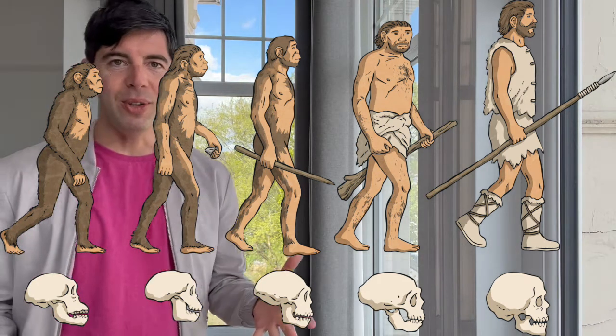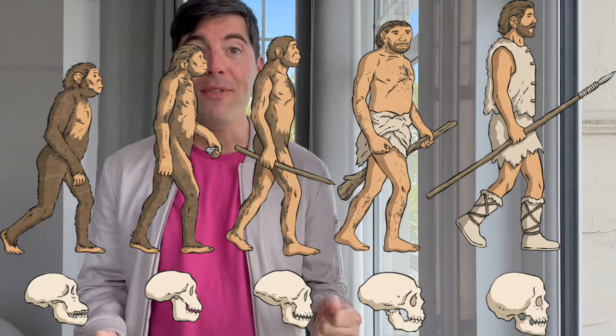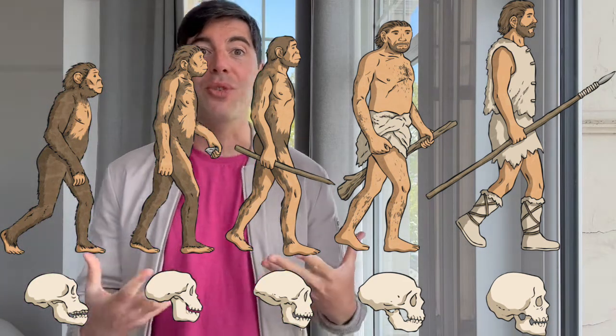What is evolution? Evolution is the gradual change in species over time, something which is not always evident at first glance.